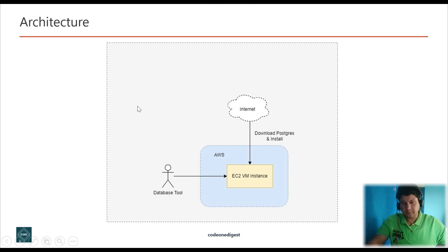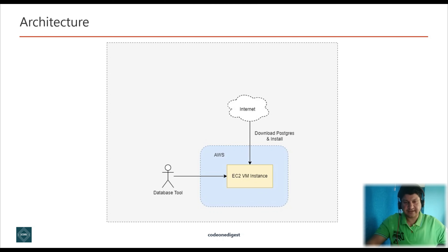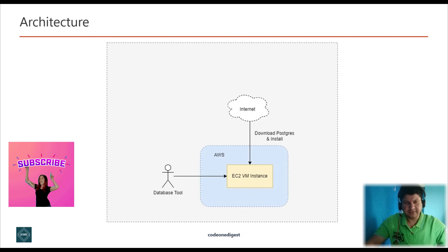Before we proceed, let's understand what we are trying to achieve. This architecture diagram will tell you exactly what we are doing. The blue area represents AWS, and inside it we have an EC2 VM instance running. We will download the Postgres database from the internet and install it on the EC2 instance, then configure it so we can access it from outside. Our database tool will connect to the Postgres DB running on EC2, and we will create schemas and tables into it.